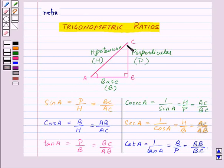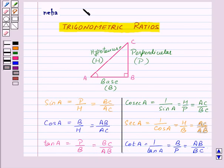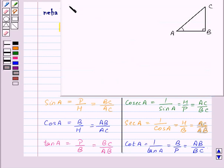Now in triangle ABC, angle B is 90 degrees. That means the sum of angle A and angle C will be equal to 90 degrees, so both angle A and angle C will be acute angles. If any one of the trigonometric ratios of an acute angle, say angle A, is given, then we can easily find the remaining ratios. Let's take an example: suppose we are given cos A equal to 7 upon 25 and we need to find the remaining trigonometric ratios for acute angle A.